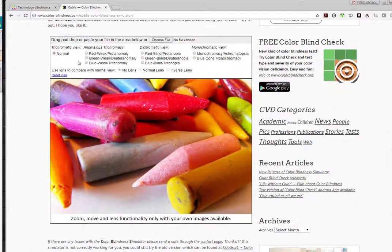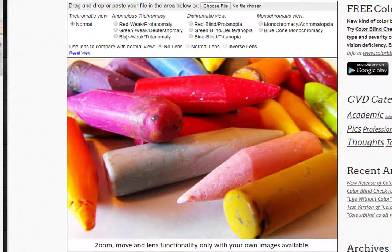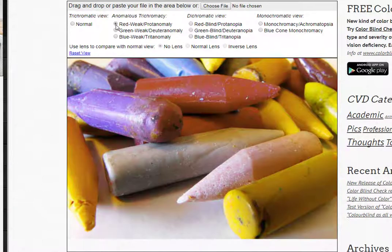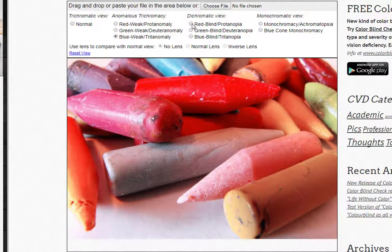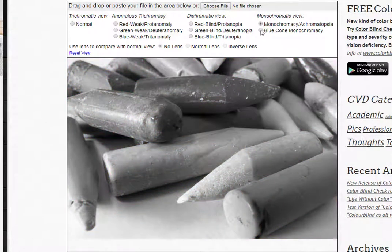When I start manipulating this, I can change it to different types of color blindness effects. So it affects the picture that we have here. I just go through the individual radio buttons and click on each one, and you see the effects below in the picture.